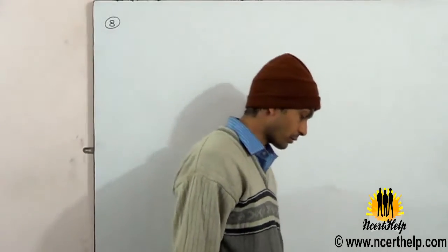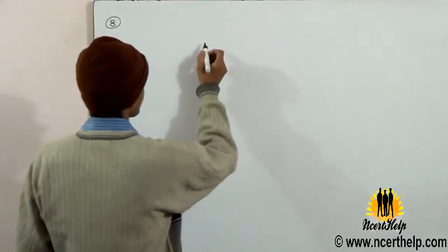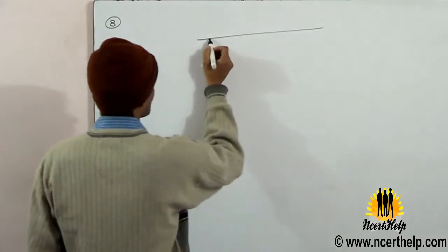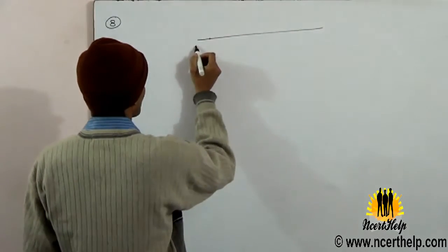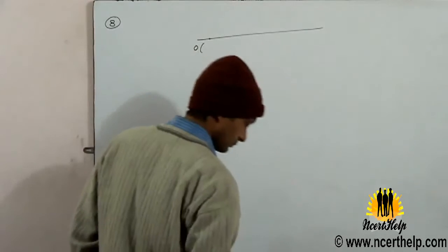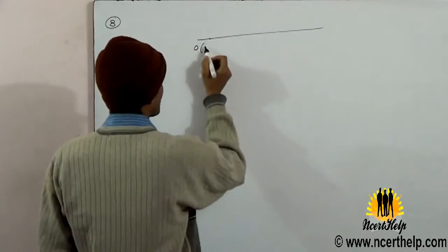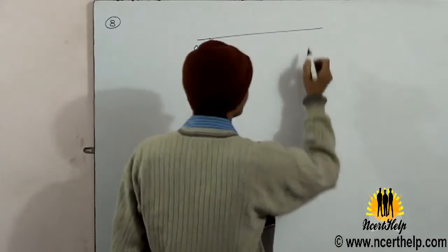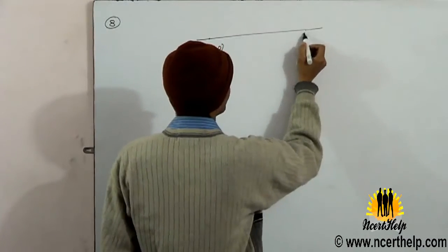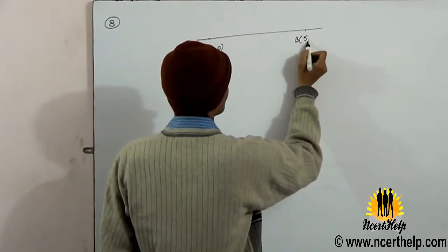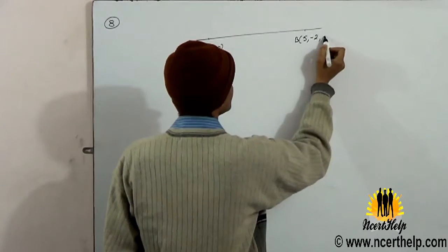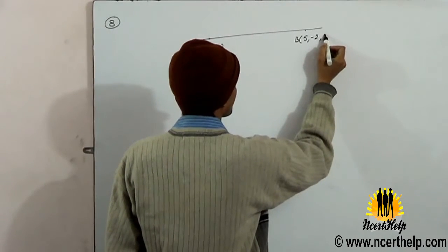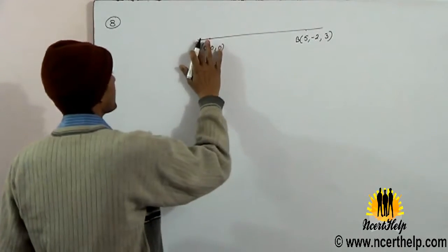Find a vector equation and cartesian equation of a line that passes through the point (0, 0, 0), 5, and 3, 2.